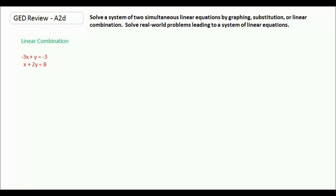The first way is linear combination. So here we have negative 3x plus y equals negative 3, and x plus 2y equals 8. What we're going to do is take one of the equations and multiply it by some number so that if we add the two equations together, either our x's will disappear or our y's will disappear. Here I have a negative 3x, so if I wanted the x's to disappear I would need a positive 3x, because negative 3 plus positive 3 is 0.